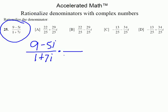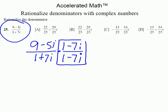We're going to strategically use what they call the complex conjugate of the denominator. The denominator says 1 plus 7i, so we're going to use 1 minus 7i. We're multiplying this thing by 1, because 1 minus 7i divided by 1 minus 7i equals 1. We're not changing the value, but we are going to change the way it looks.